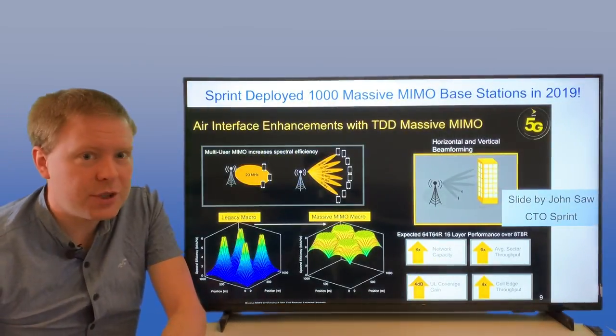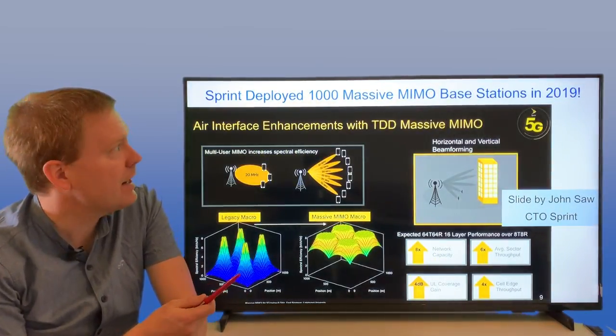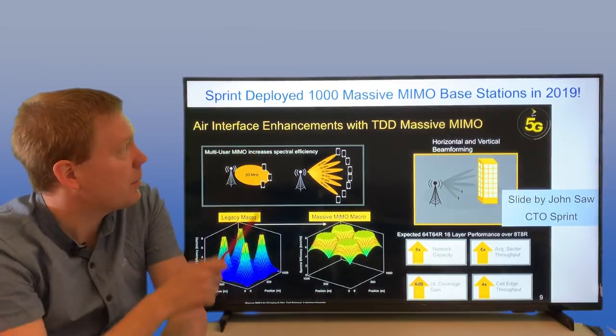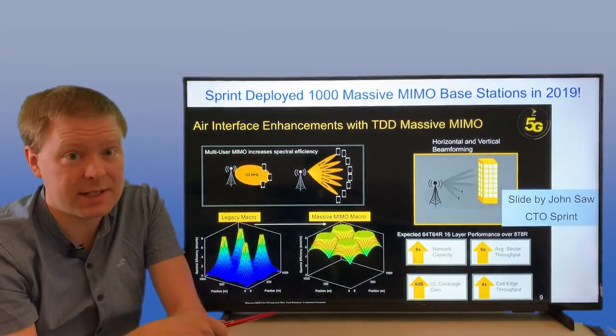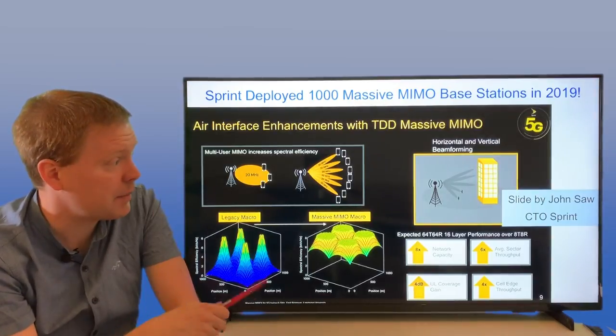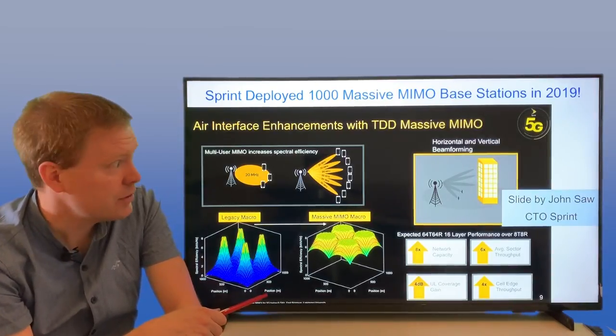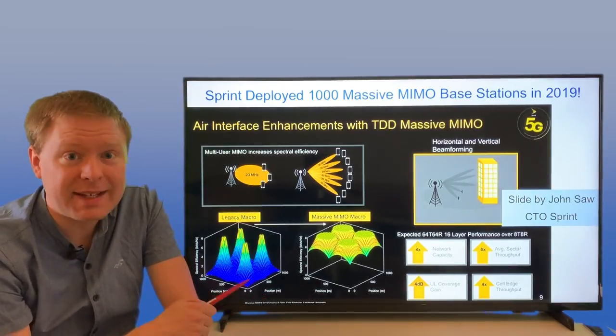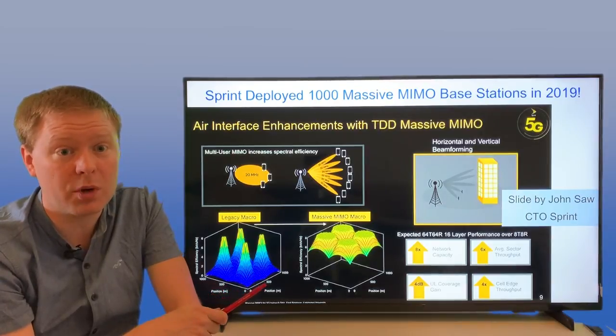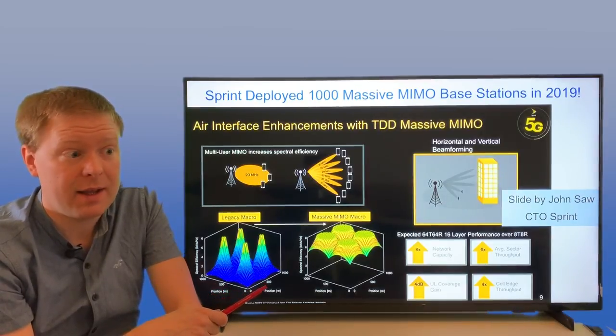For example, the US operator Sprint claimed in May last year that they were deploying a thousand Massive MIMO base stations in 2019. I haven't followed up exactly on if they did that or not, but that's at least what they've been claiming, and they've been also using Massive MIMO as a key selling point for their network.